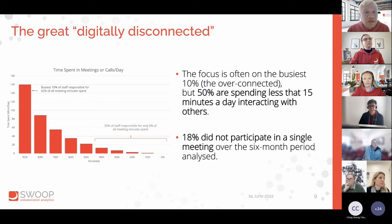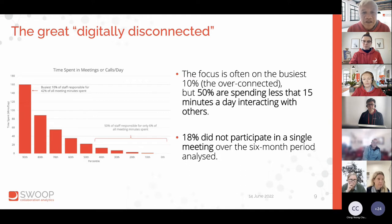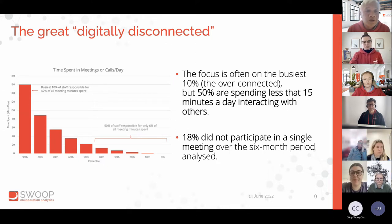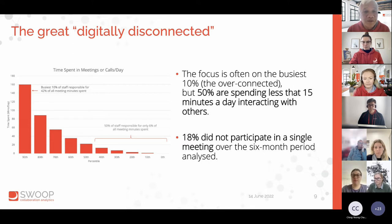Digging deeper into the mismatch between the busiest 10% and the disconnected 50%: that bottom 50% is spending less than 15 minutes a day interacting with others — they're not overloaded at all. And 18% did not participate in a single online meeting over a six-month period. Some may have been frontline workers, but it's hard to visualise someone in this day and age not having at least one call in a six-month period. There's clearly a big cohort of people being left out of the discussion.